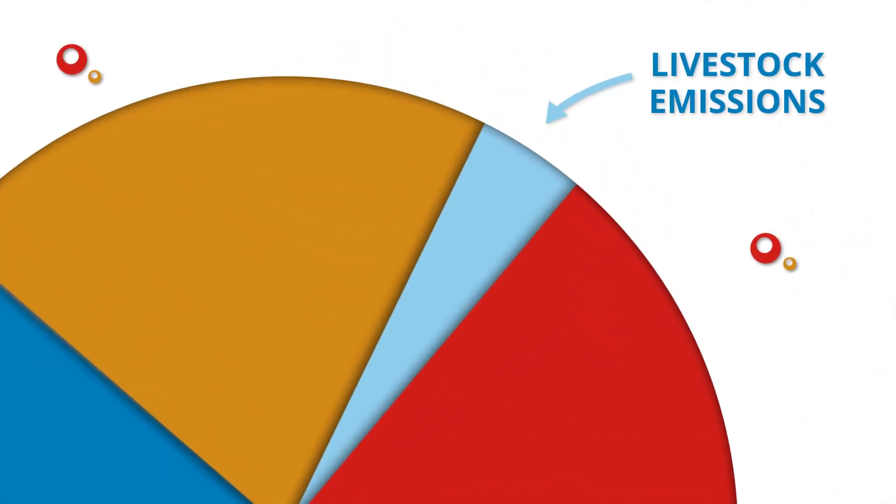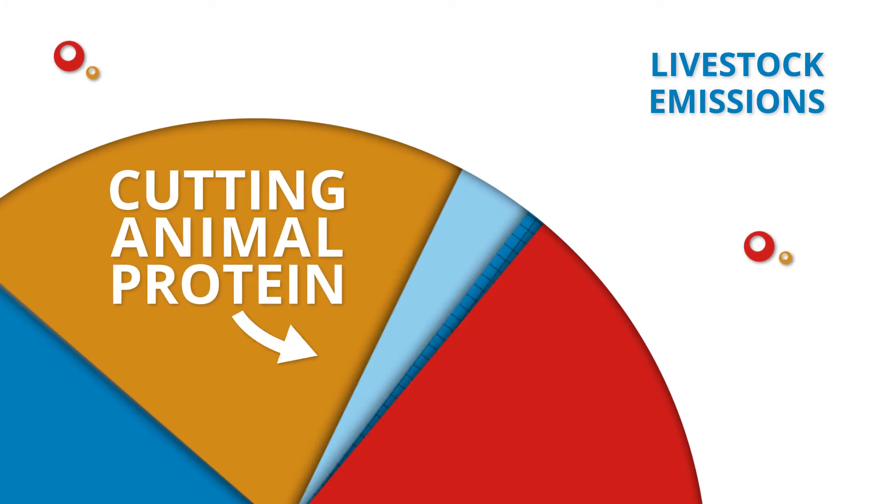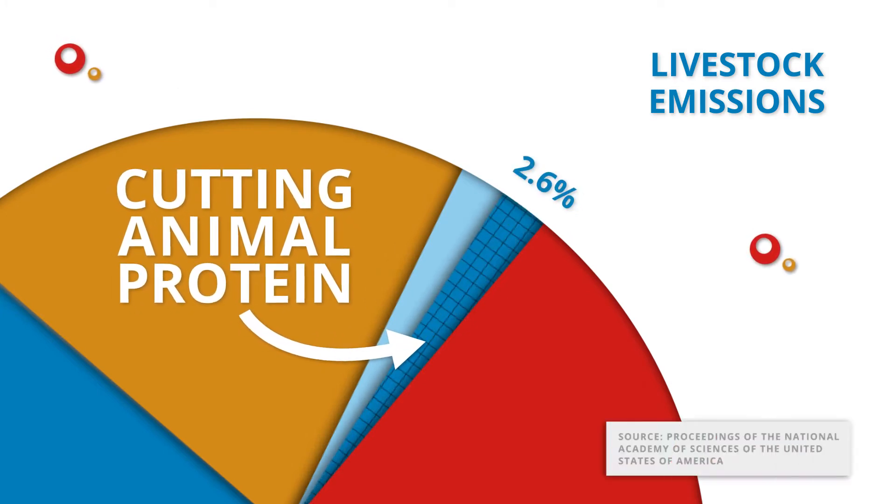Today, farmers raise more livestock with fewer emissions than ever before. In fact, researchers have found that cutting out animal protein would only cut greenhouse gases in the U.S. by 2.6 percent.